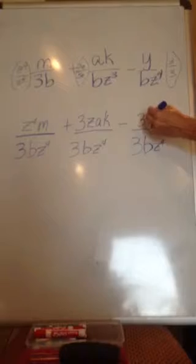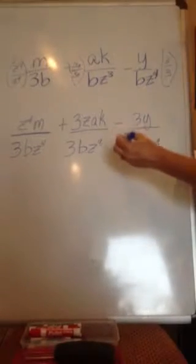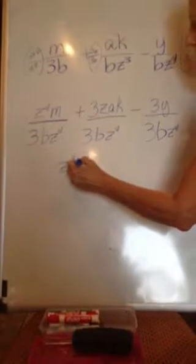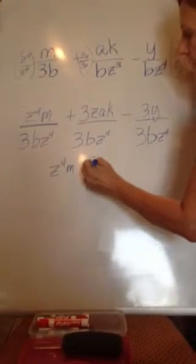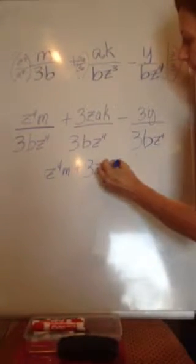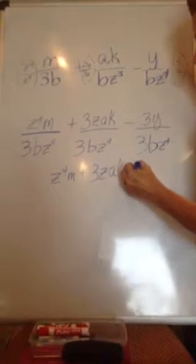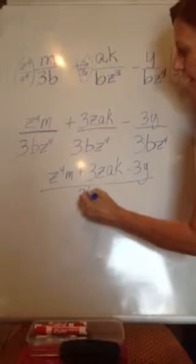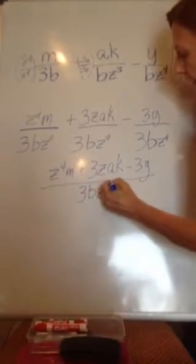Here, all we had to do was multiply by 3 over 3, and we have 3y. Now, what we can do is combine all of our numerators, all of our terms with addition and subtraction in the numerator, and write it all over the one common denominator.